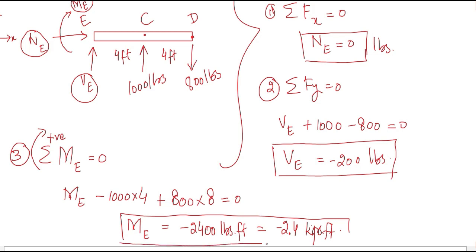So the three internal loadings at cross-section E are: NE = 0 pounds, VE = −200 pounds, and ME = −2400 pound-feet (−2.4 kip-feet). This completes problem number one from the chapter of Stress. Thank you for watching.